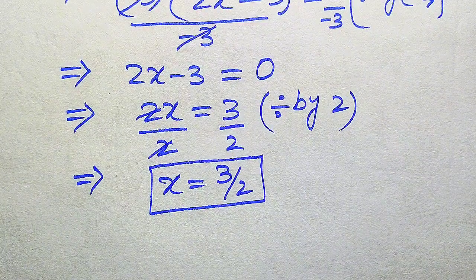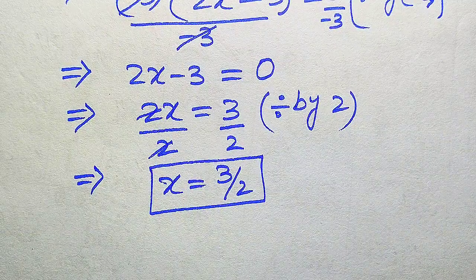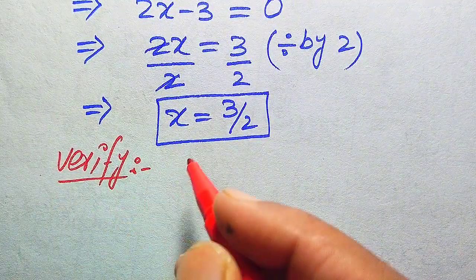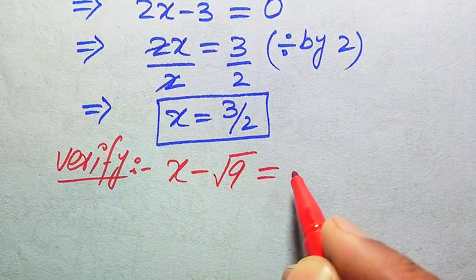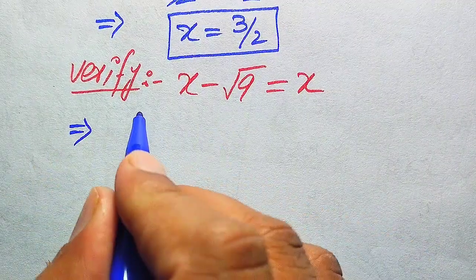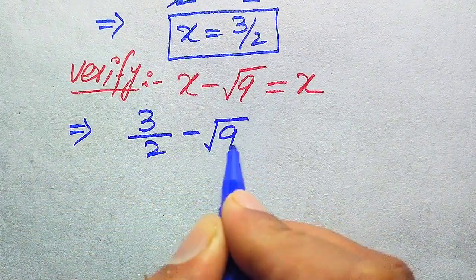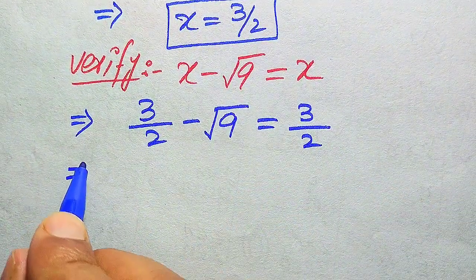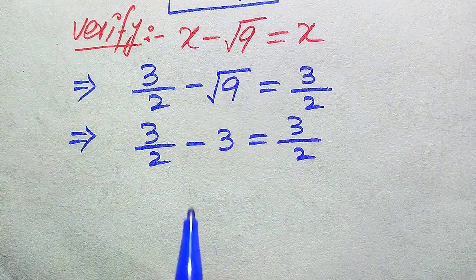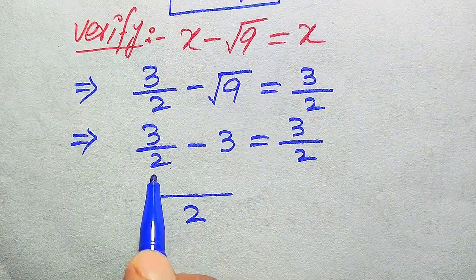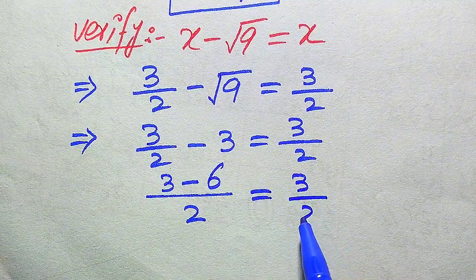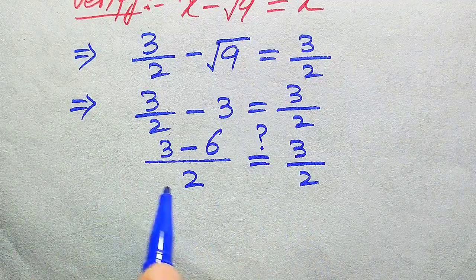In the next step, we verify whether x equals 3 over 2 is a solution or an extraneous root. We copy the given equation: x minus square root of 9 equals x. Substituting x equals 3/2 on both sides: 3/2 minus square root of 9 equals 3/2. Since square root of 9 is 3, we get 3/2 minus 3 equals 3/2. Taking the common denominator gives us 3 minus 6 over 2 equals 3 over 2.